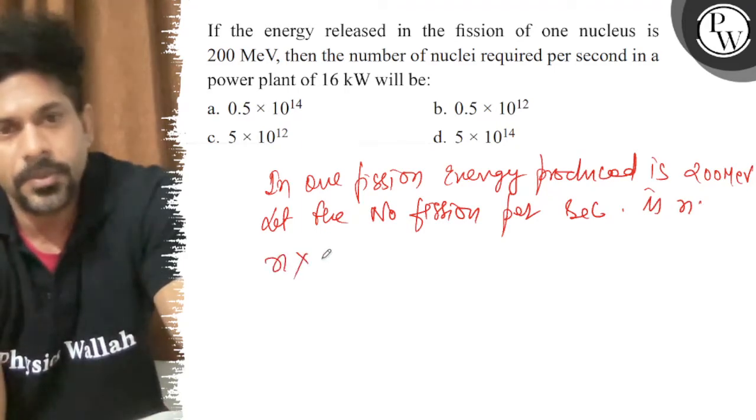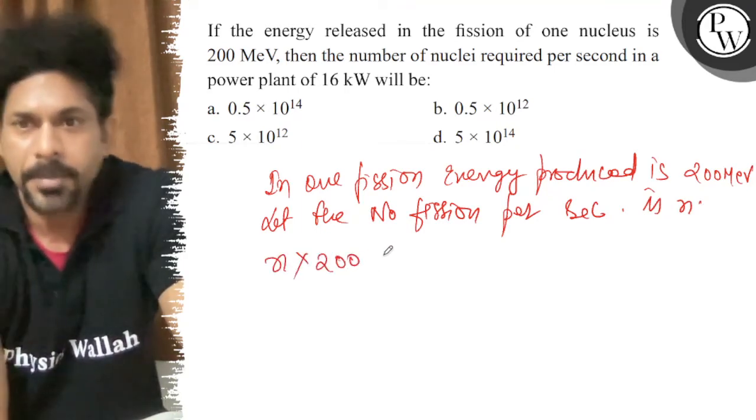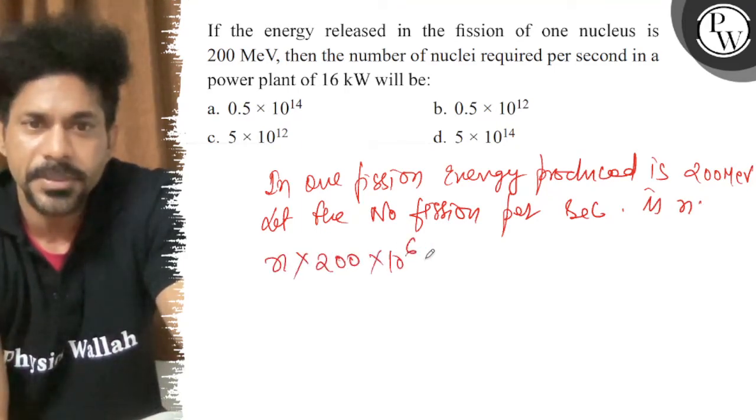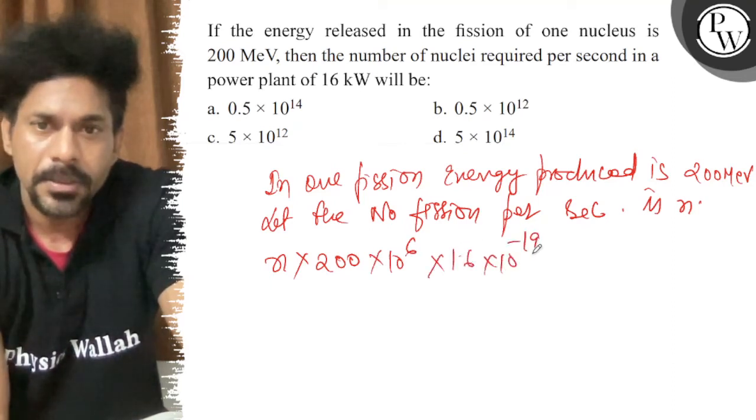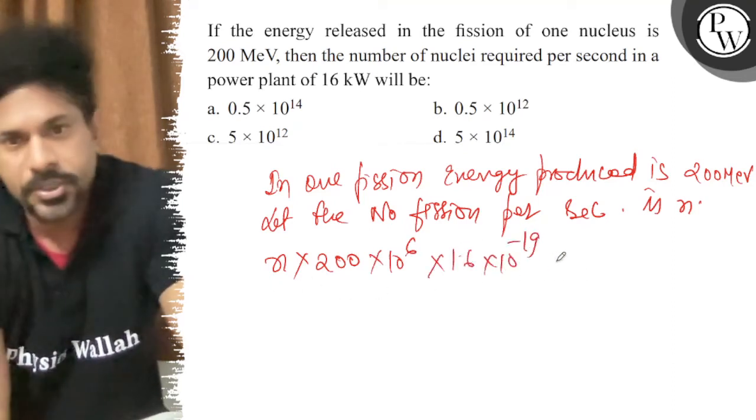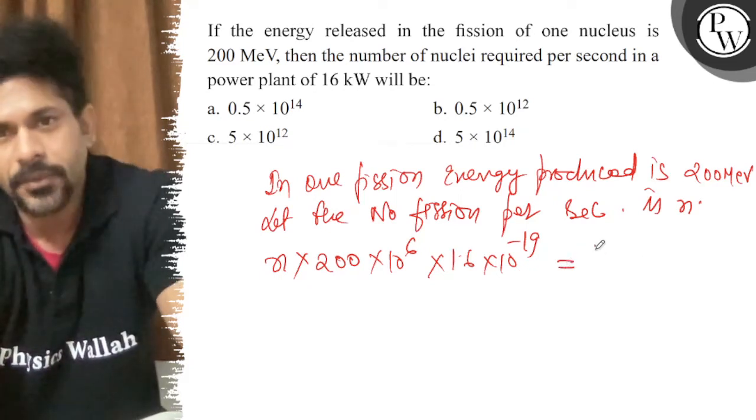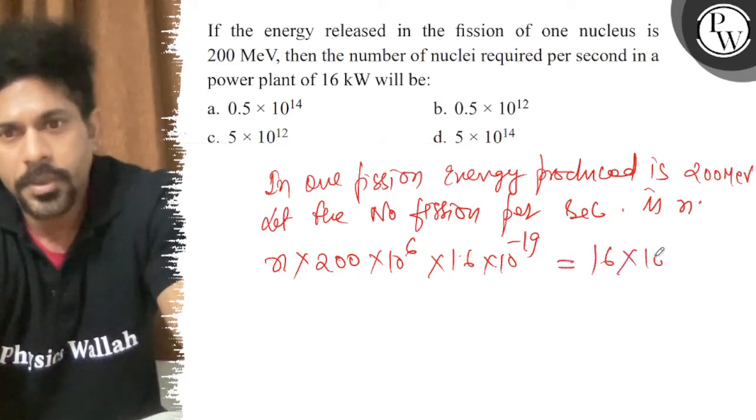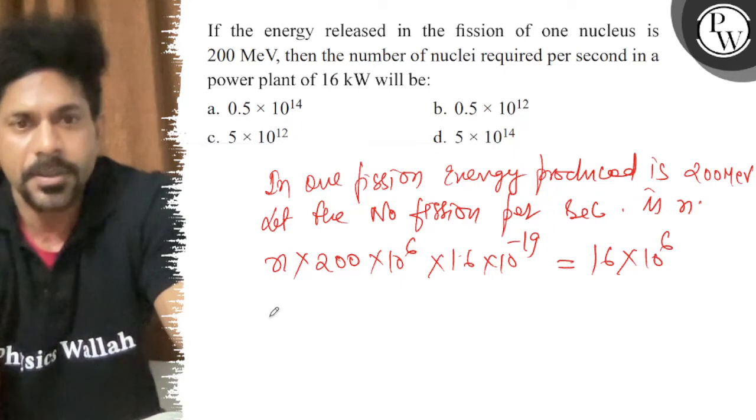So, small n into 200 MeV, 10 power 6, into 1.6, 10 power minus 19 Joule. That should be the power which is required, 16 kW, 10 power 3.